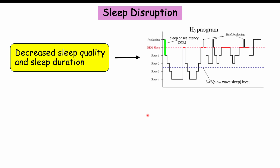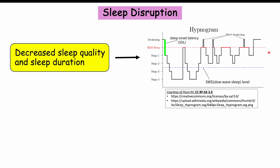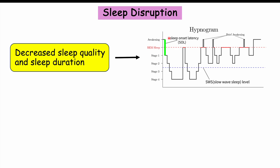Looking at a sleep cycle graph — a hypnogram — there are multiple stages of sleep. Stage one, then stage two, then stages three and four, now often combined into slow-wave sleep, which is the deepest level of sleep. Slow-wave sleep often goes back into stage two and then into REM sleep, or rapid eye movement sleep — when we dream. This sleep cycle occurs multiple times throughout the night.